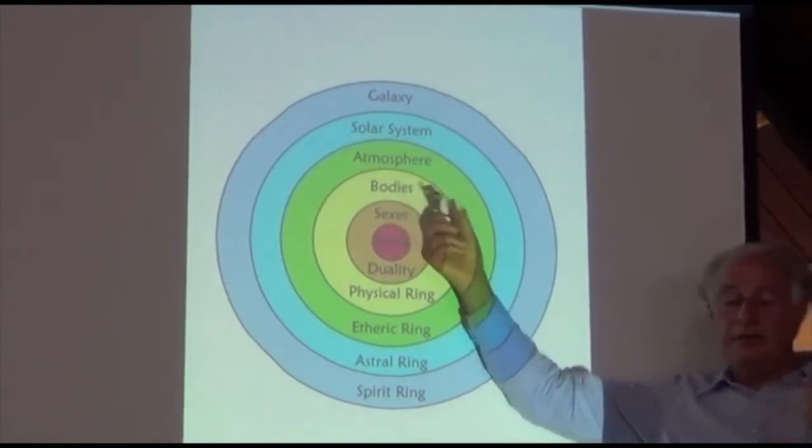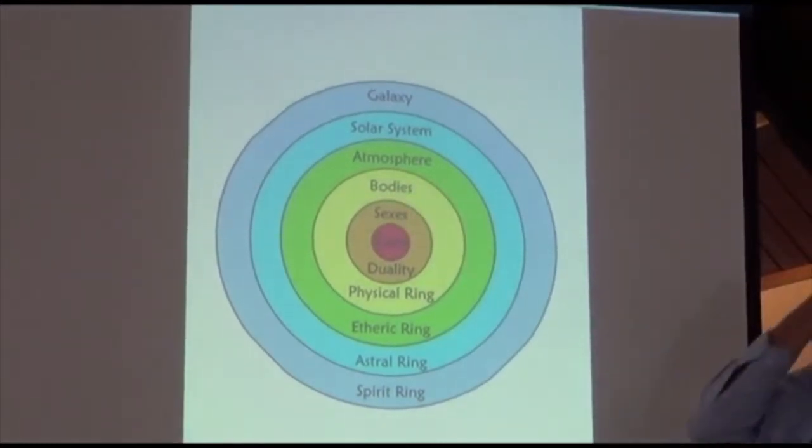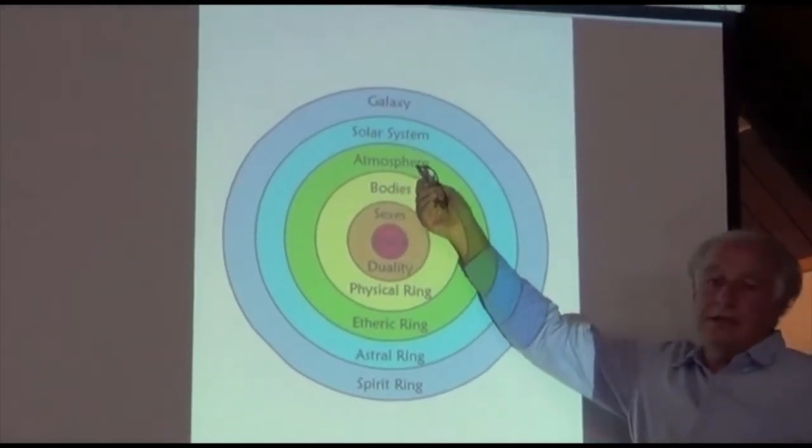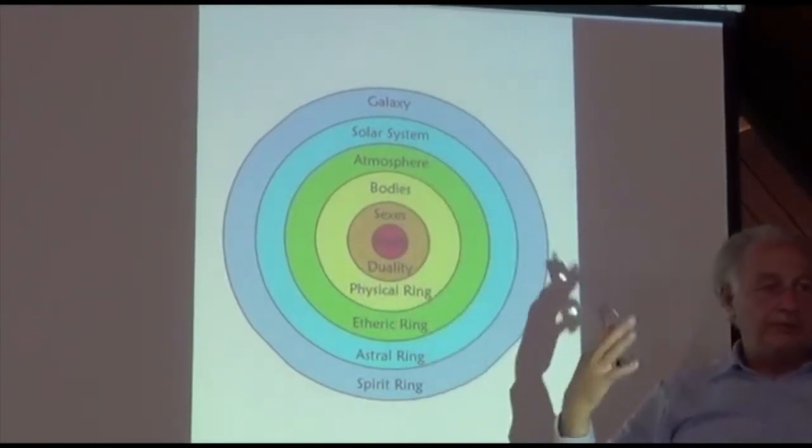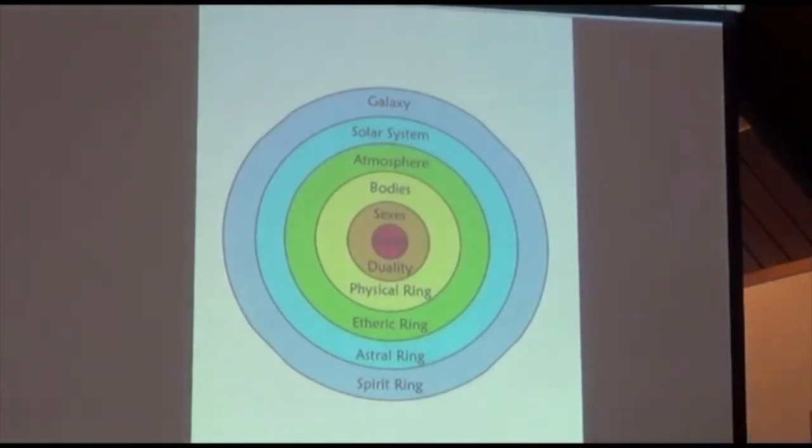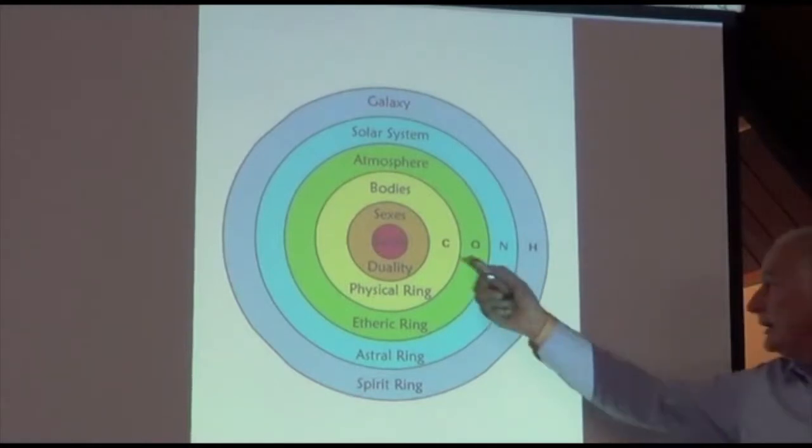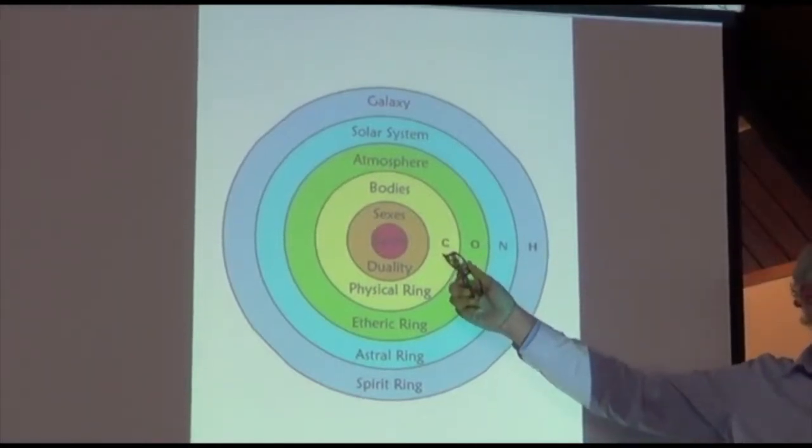Those physical bodies, as we identified, have three paths: the nerve sense, rhythmic, and metabolic system. And this exists within the atmosphere. The atmosphere is made up of these elements of warmth and light and moisture and earth. So we find that the physical life forms are carbon-based life forms.